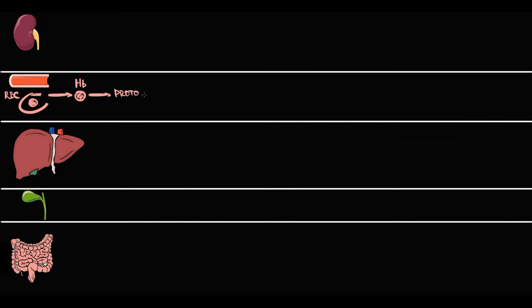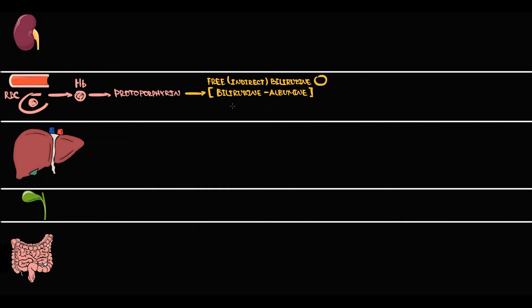With destruction of red blood cells, hemoglobin is released into the blood. Hemoglobin is degraded to protoporphyrin, and protoporphyrin undergoes co-oxidation with formation of bilirubin. In the bloodstream, albumins almost immediately bind to bilirubin, creating a bilirubin-albumin complex. This complex we call free bilirubin, unconjugated bilirubin, or indirect bilirubin.